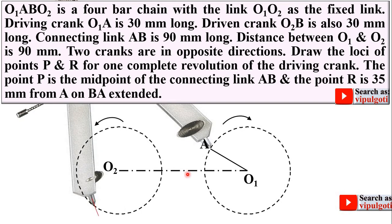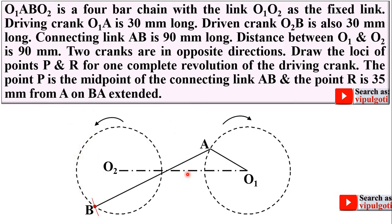So you can locate the B point, then join AB and O2B. So this is your initial position of the four bar mechanism.